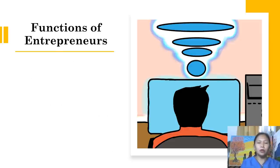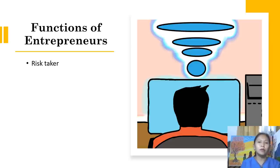Functions of Entrepreneurs. Most entrepreneurs are risk-takers. An entrepreneur bears any risk in starting up and sustaining his or her business. They assume responsibilities that may arise in the course of business, which may be caused by changes in time or quality. They are always ready for emergencies, and should competitors emerge, they think of strategies to outshine them. To be successful, you must accept all the challenges that come your way.